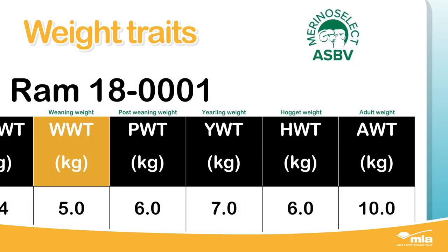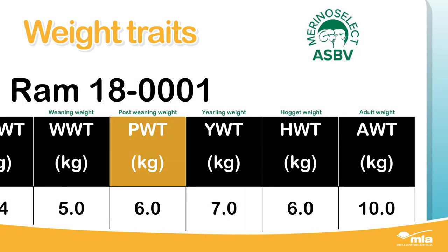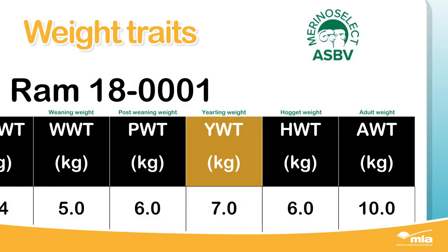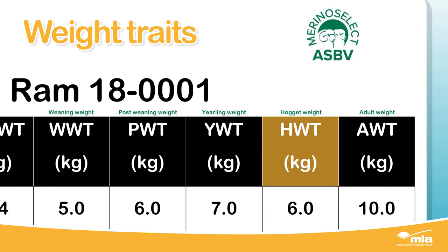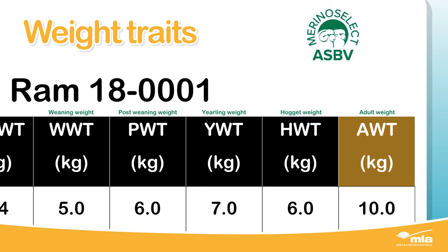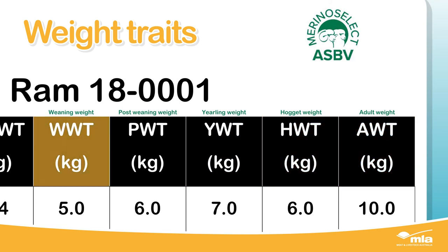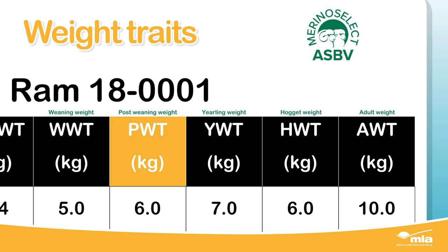It's important to look at the age most applicable to your production system. If turning off lambs as suckers, the weaning age is most important. Or if finishing lambs and turning off at 7 months, the post weaning age is most important.